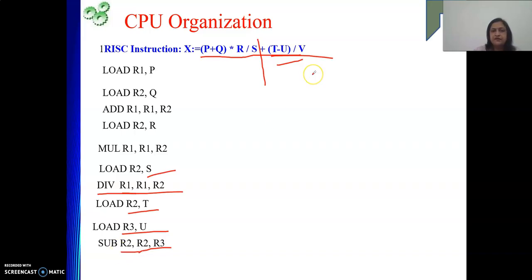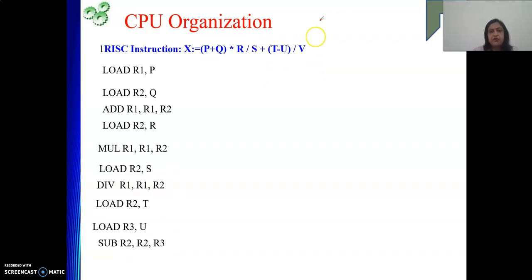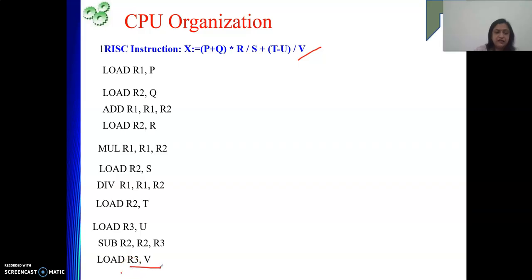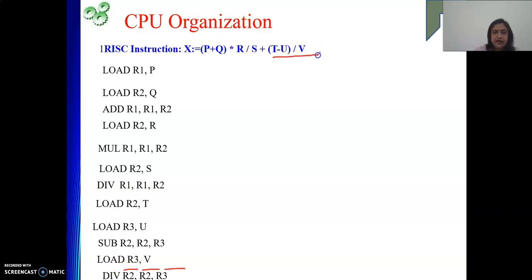Before performing the next division, V must be loaded into a register. We can take R3 since it has no further use. So: LOAD R3, V. Then: DIV R2, R2, R3 — R2 is divided by R3 and the result is stored in R2. So this second part of the expression is now in R2.